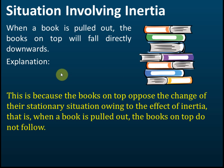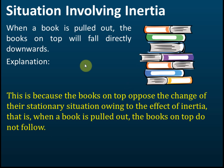The explanation: the books on top oppose the change of their stationary state owing to the effect of inertia. Inertia causes them to resist any change in their state of motion. So when a book is pulled out, the books on top do not follow — they remain in place owing to inertia. Of course, after the book is removed they cannot hang in the air, so owing to the pull of gravity they fall downward.